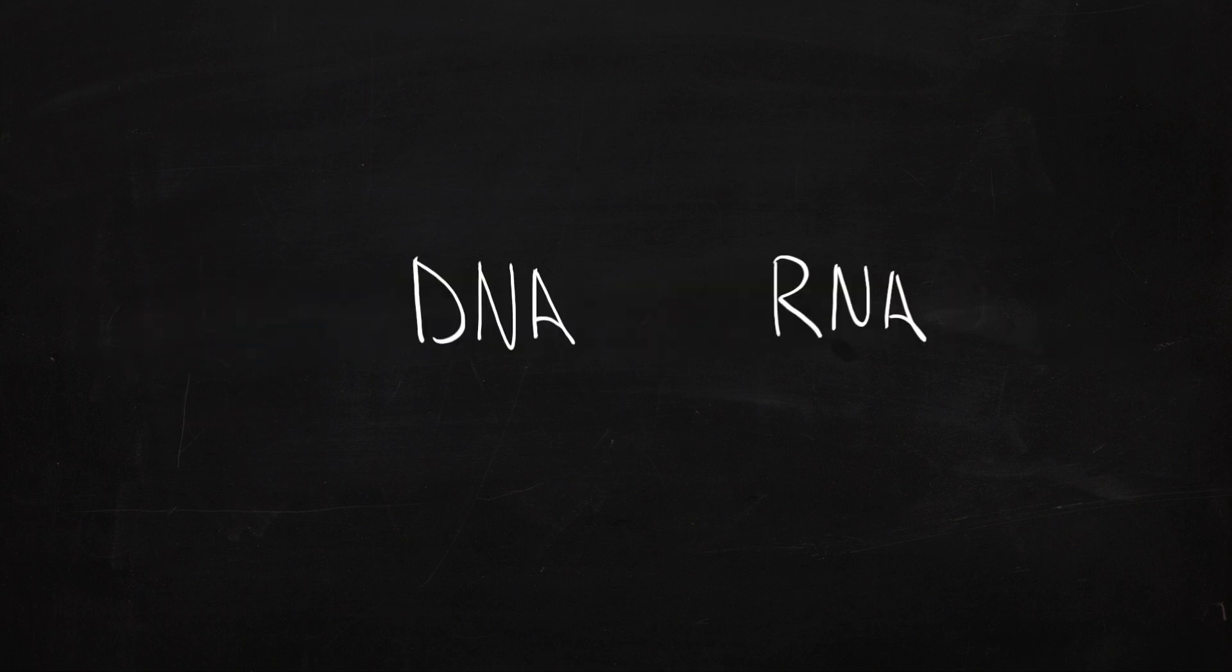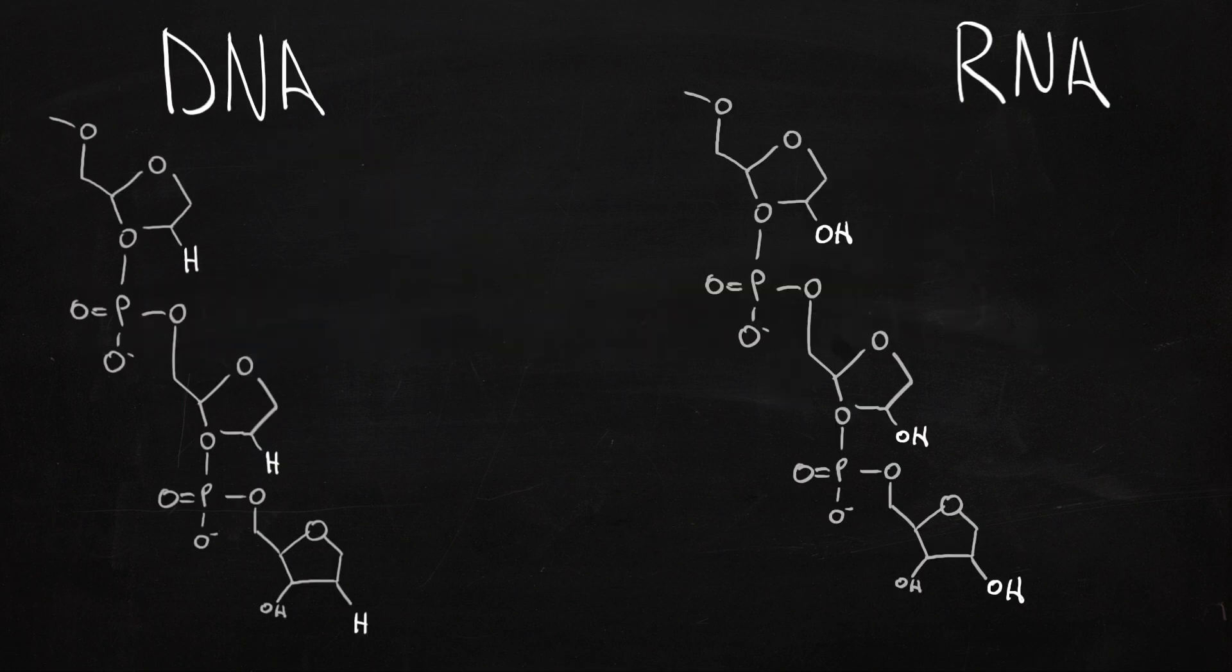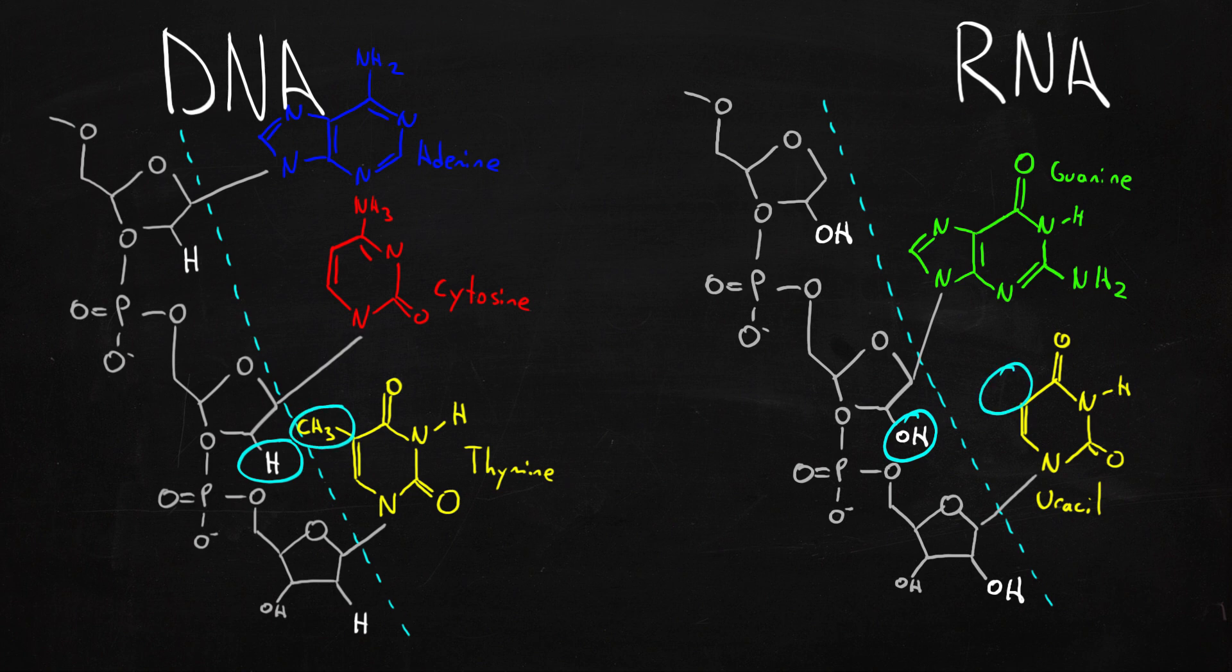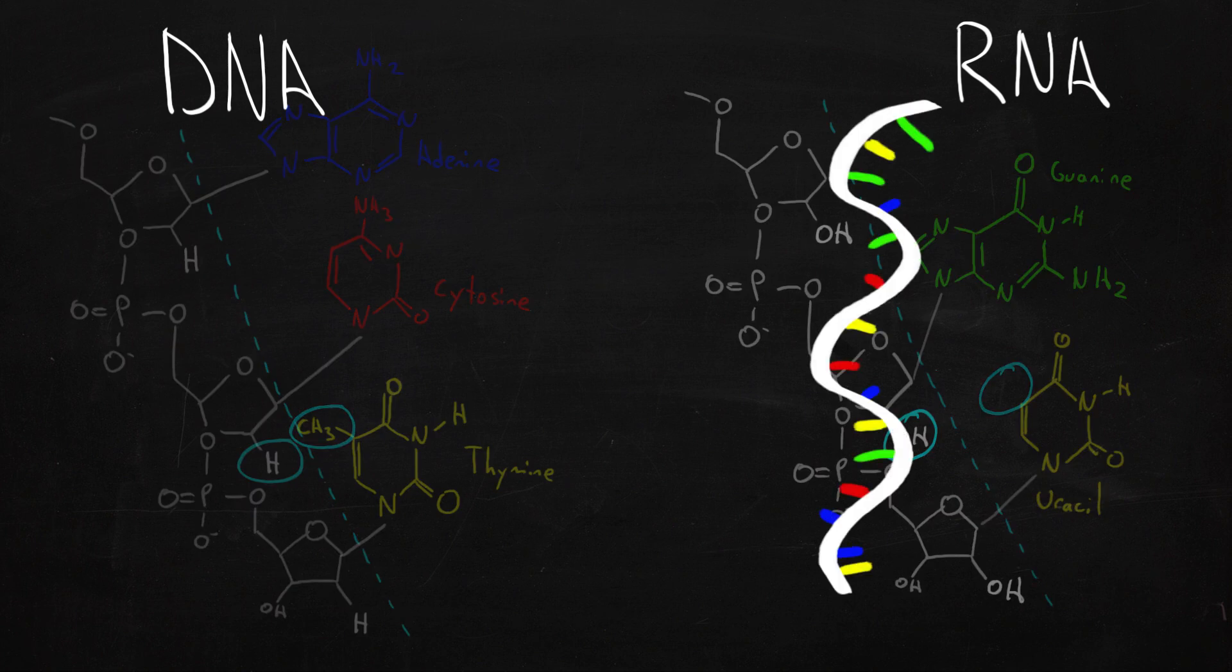RNA is basically the same as DNA, except it has an R, which chemically refers to this difference here. Also it uses the nucleotide uracil instead of thiamine as a coding element, but they look very similar and they basically do the same thing. Also RNA is only a single strand, and it's not as stable as DNA.